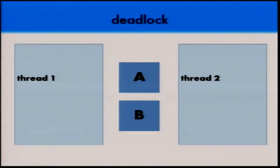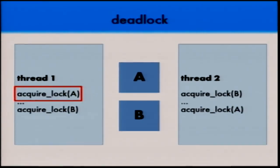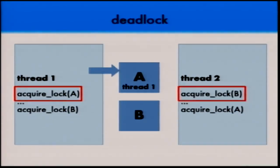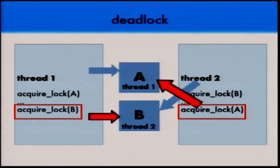Here's a deadlock example. A and B are locks; thread one grabs A then B, while thread two grabs B then A — the opposite order. If thread one grabs A and thread two grabs B at the same time, thread one then tries to grab B — it has to wait. Thread two tries to grab A — it has to wait. Both threads are now deadlocked; they will never make progress. Any other thread wanting lock A or B gets stuck too.